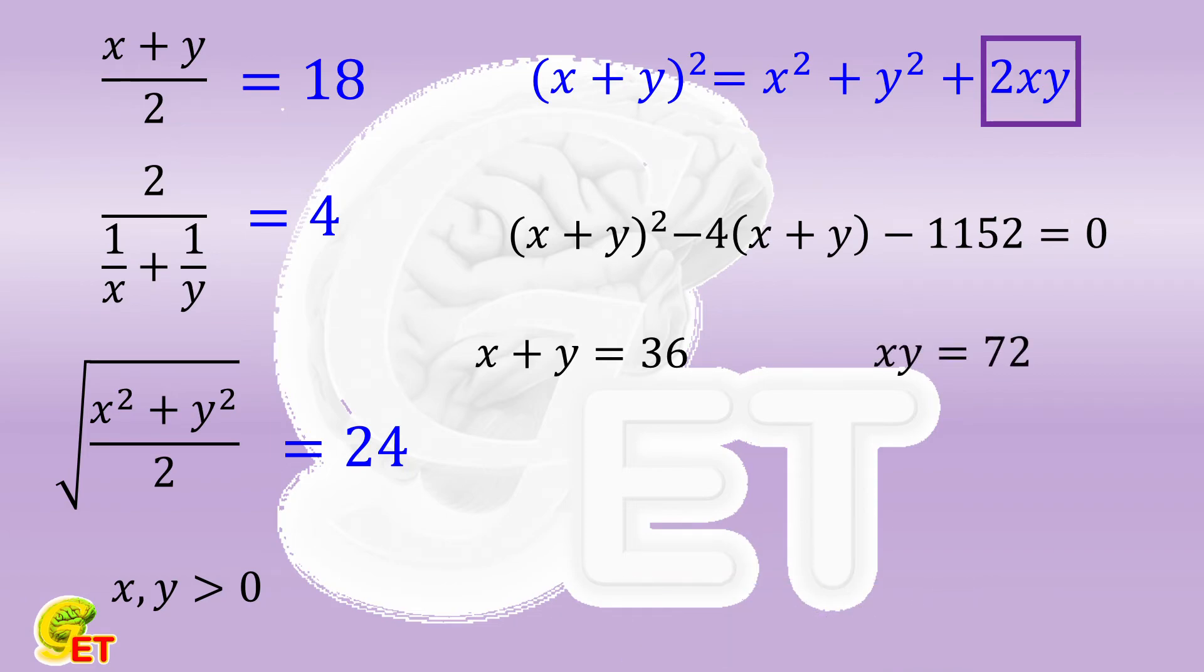So according to Vieta's formulas, we can conclude that x and y are actually the two solutions of such a quadratic equation, which are 6 times 3 plus or minus the square root of 7 respectively.